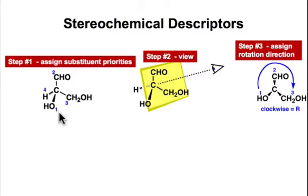And here's how we assign R and S to a stereochemical configuration. We begin by prioritizing the substituents according to atomic number. And so you can see for this stereocenter, the oxygen has the highest atomic number. It gets the priority number 1.